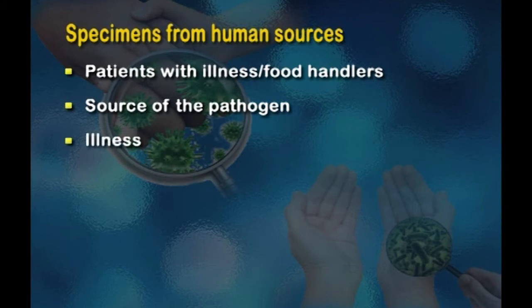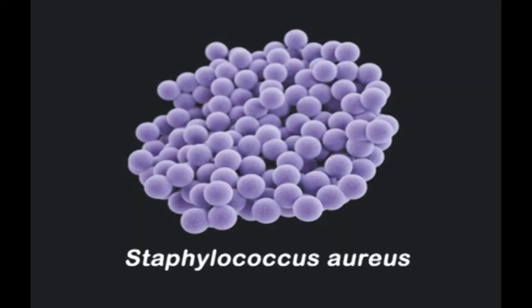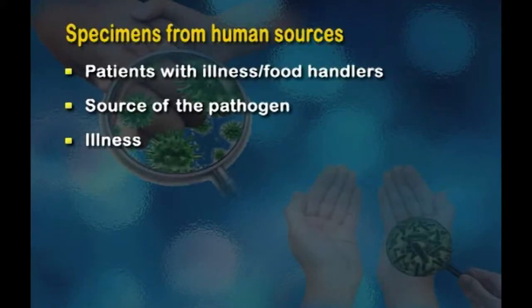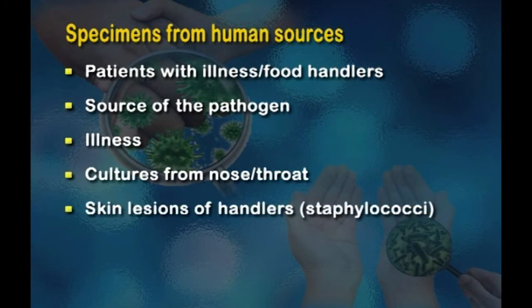Specimens from patients with illness or food handlers may also be taken to determine the causative organism and the ultimate source of the pathogen. The specimen type depends on the illness — for staphylococcal food poisoning, cultures from the nose, throat, or skin lesions of handlers may be taken. For gastroenteritis, faecal samples from food handlers are taken to test for salmonella and shigella. The main purpose is to identify whether there are any carriers among food handlers — a carrier harbours a microorganism but shows no symptoms, making them silent and dangerous transmitters.